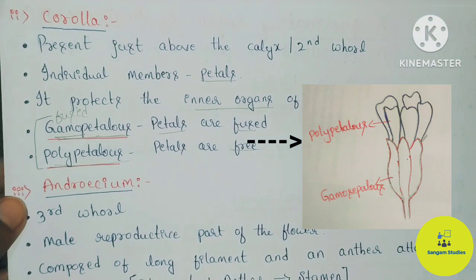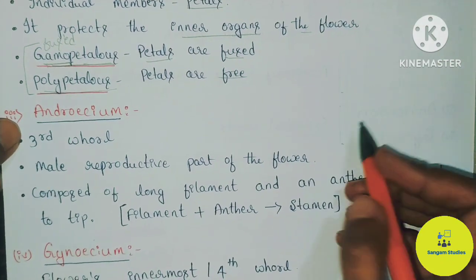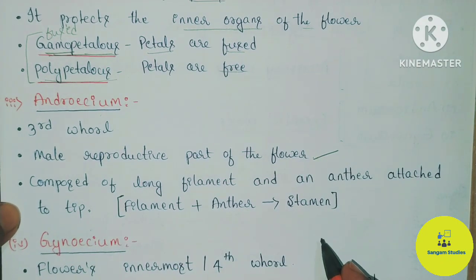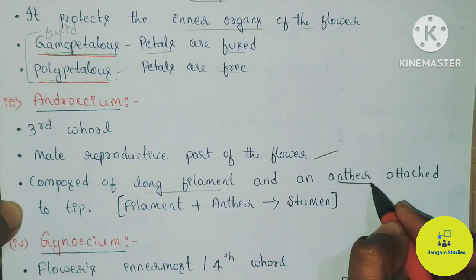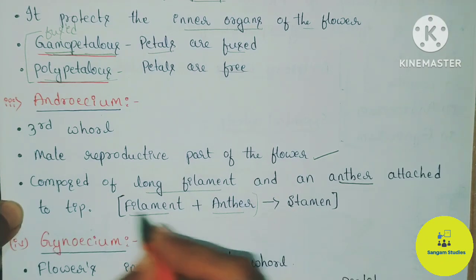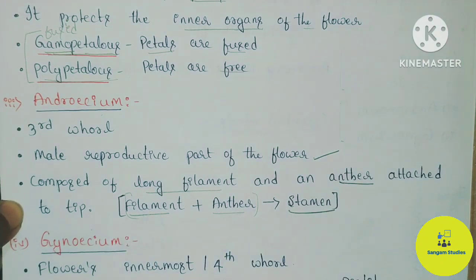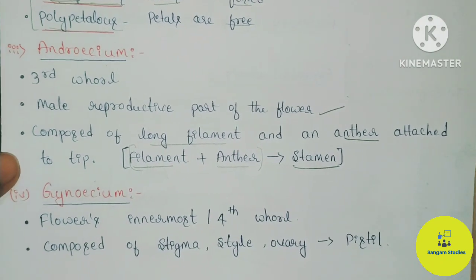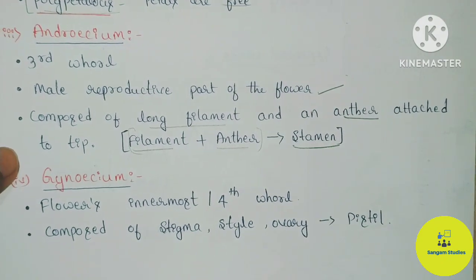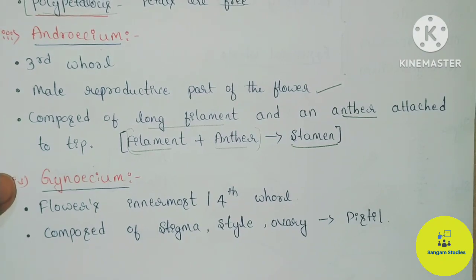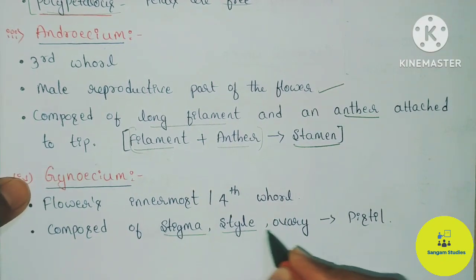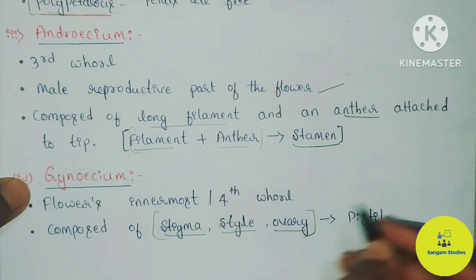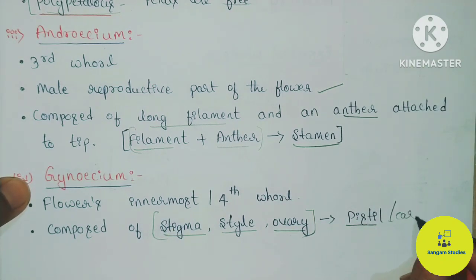Androecium is the male reproductive part of the flower. It has a long Filament and an Anther. The Stamen is present. Gynoecium is the innermost whorl and the female reproductive part. It consists of Stigma, Style, and Ovary. The individual units are Pistil and Carpel.